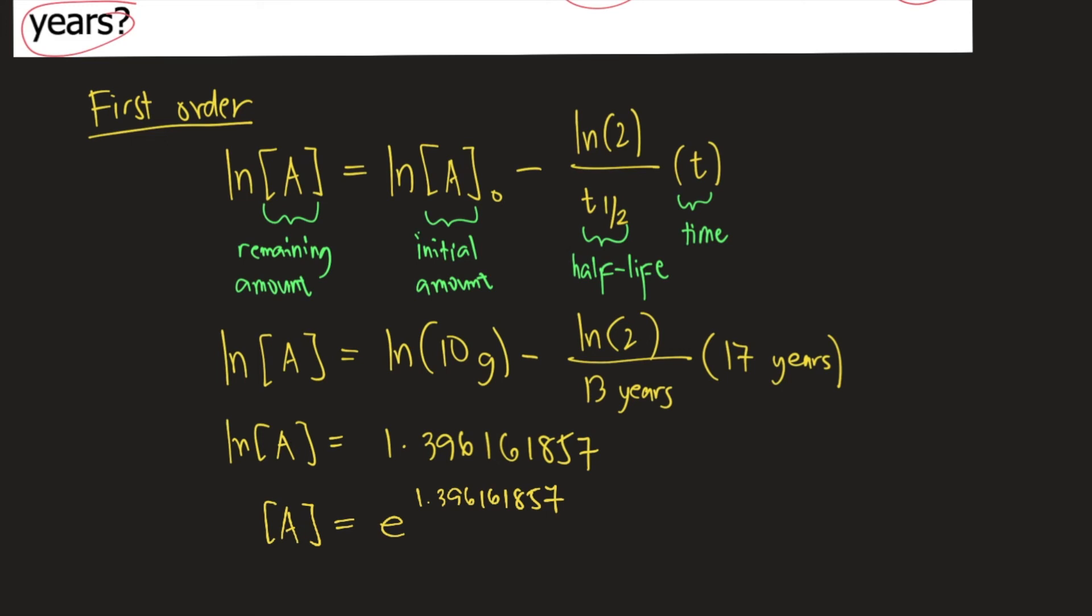If you solve this, just look for e in your calculator. You'll find the symbol e raised to 1.396161857, and that gives you 4.03966536 grams.